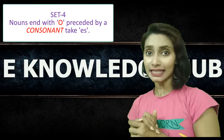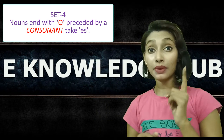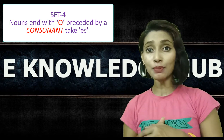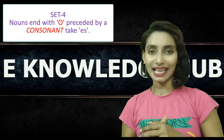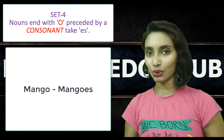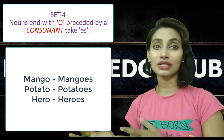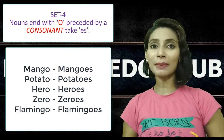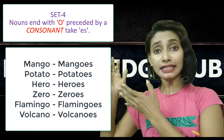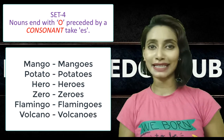Look at set 4. In set 4, the words end with letter O but preceded by a consonant. When preceded by a consonant, to make them plural we have to add ES. Let's see some examples: mango, mangoes; potato, potatoes; hero, heroes; zero, zeroes; flamingo, flamingoes; volcano, volcanoes. These nouns end with letter O preceded by a consonant, hence we have to add ES.